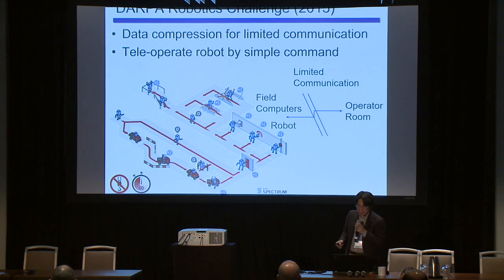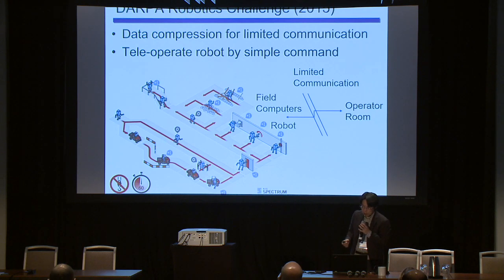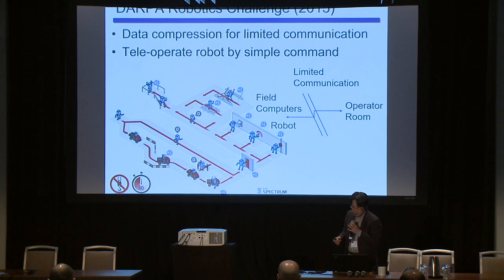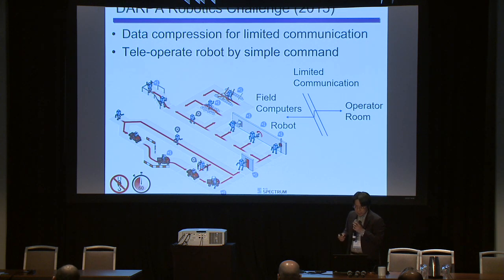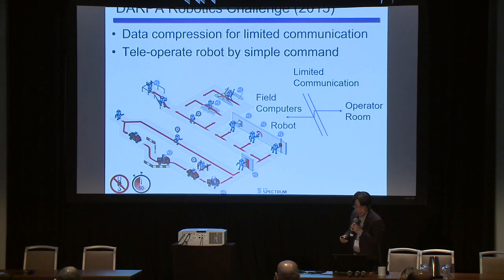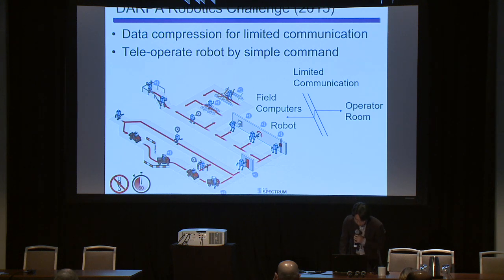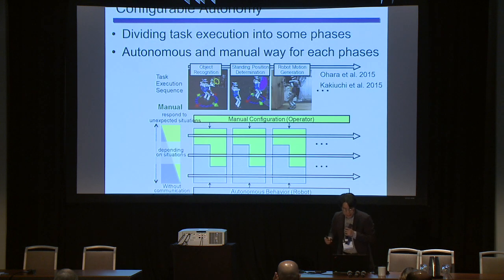We adapted data compression for the communication between operator and robot. Because of the communication limitation, we cannot do real-time feedback such as the operator changing behavior depending on vision and robot sensors. So we send a simple command to the robot, and the operator makes decisions based on the vision and sensor values already received.